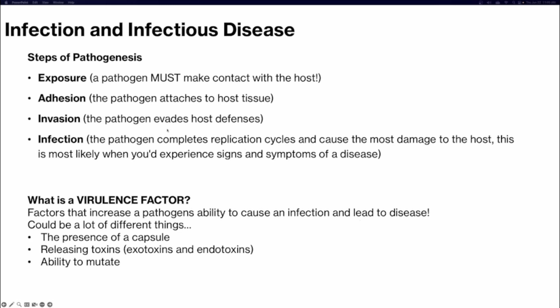The steps of pathogenesis are exposure, adhesion, invasion, and infection. Exposure makes sense as the first step because you have to make contact with a pathogen to ever be infected. Then adhesion — the pathogen needs to attach to host tissues. Then it will evade host defenses like your immune system. The infectious stage is where the pathogen is actively replicating, releasing enzymes and potential toxins, and where you're most likely to experience the classic signs and symptoms of that disease.